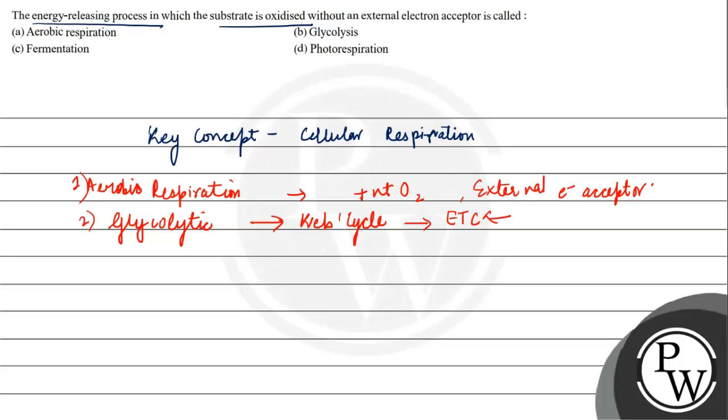It participates in the external electron acceptor reaction. When we talk about the third option which is fermentation, in this case no ETC takes place and substrate level phosphorylation takes place.